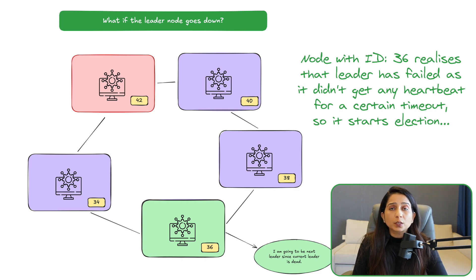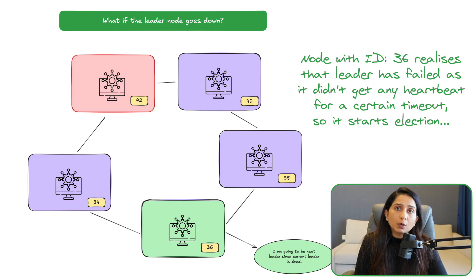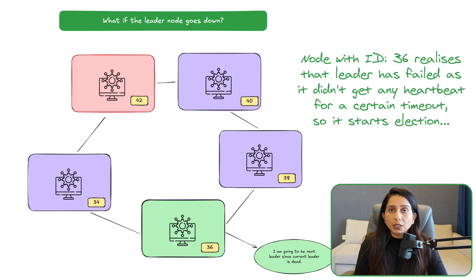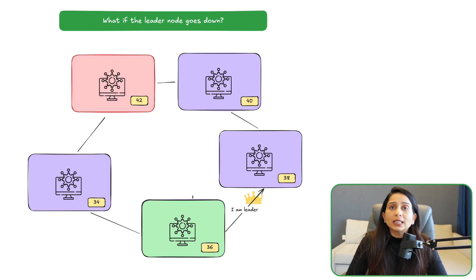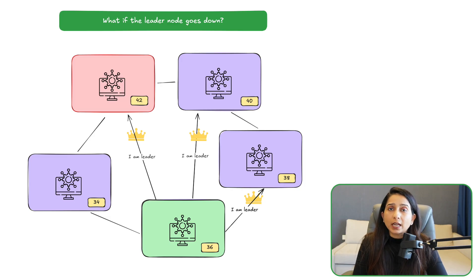The criteria for a node to know it should start an election is based on a timeout. For example, if the leader was sending heartbeats every 30 seconds, a node that has not received a heartbeat for one minute or one and a half minutes — meaning it has missed three heartbeats — may consider that a criteria to start a new election.